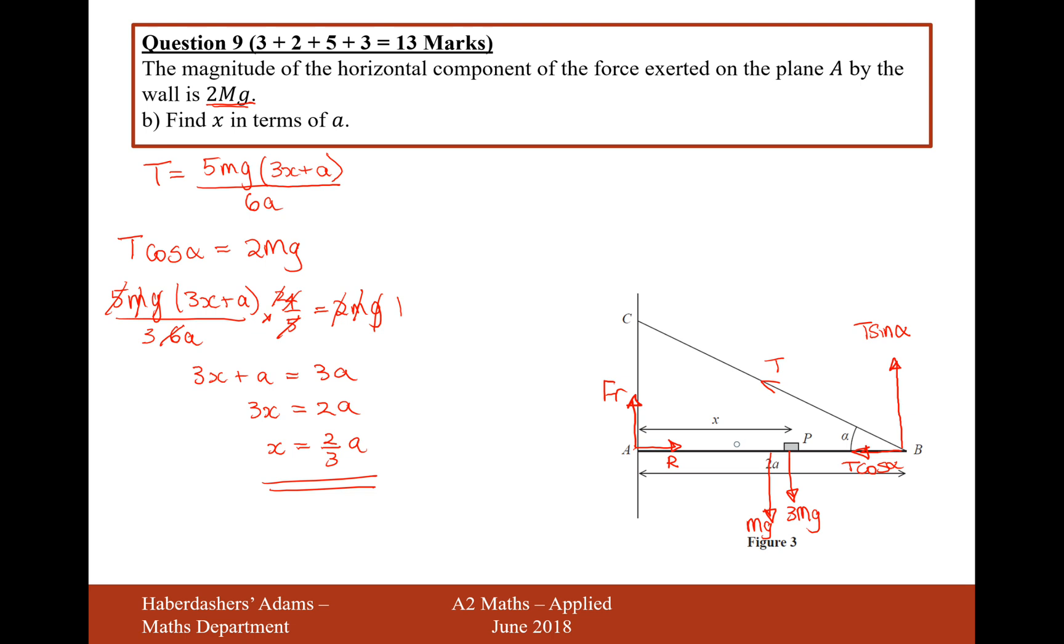So, actually, the particle P is on this side here, 2 thirds of the distance from A, well, 2 thirds of L, which is the distance from A to P. So, there we are. That's our answer for part B.